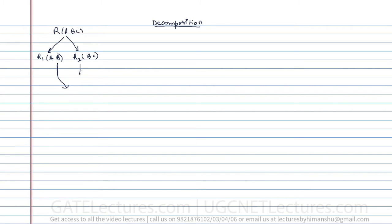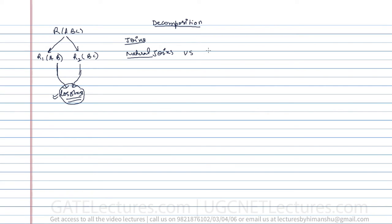The decomposition should be lossless — lossless means when you combine these relations again, you should not get any extra attributes or lose any values compared to the original. To understand lossless decomposition, we first need to understand natural join versus cross product of two tables. After that, we'll see how to determine whether a decomposition is lossless or lossy.